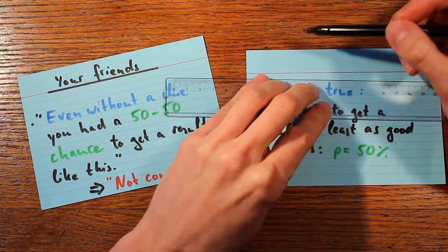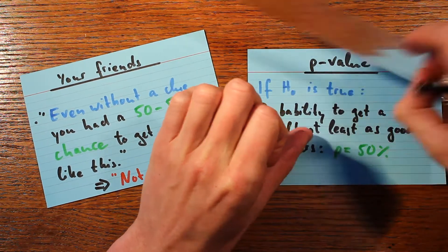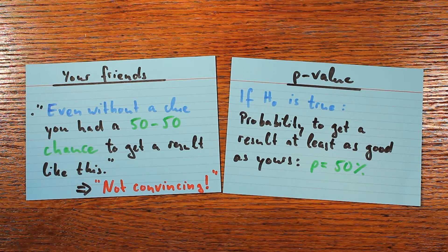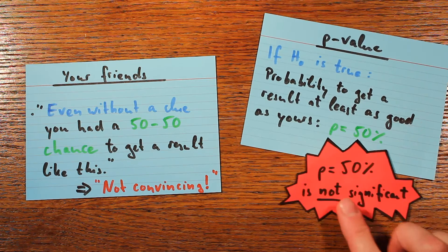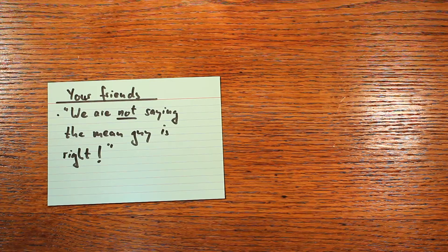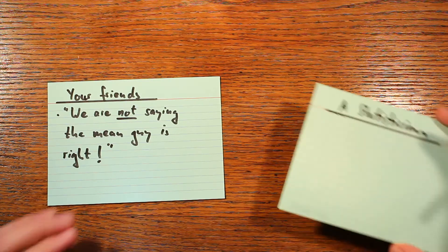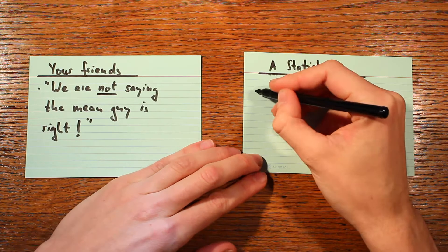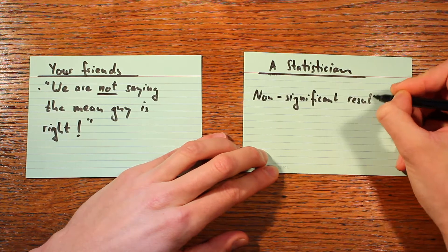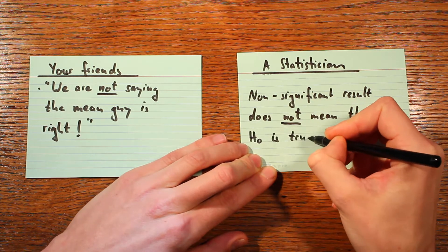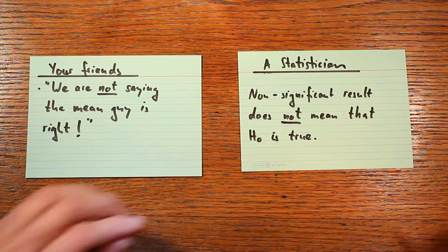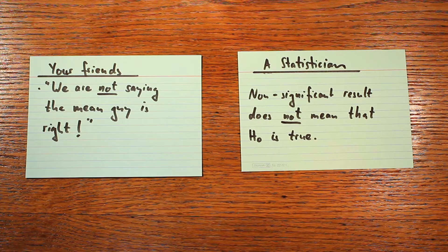The statistician would call this the p-value. Your friends concluded they are not convinced, and the statistician would say your result is not statistically significant because the p-value is too large. Then your friends were being fair and told you that just because you didn't convince them with this one prediction, they don't necessarily believe the mean guy yet who said you don't know anything. A statistician would say pretty much the same thing: while your results are non-significant — so not convincing — that doesn't make the null hypothesis true either. In other words, it doesn't show you're clueless. We just can't tell yet.